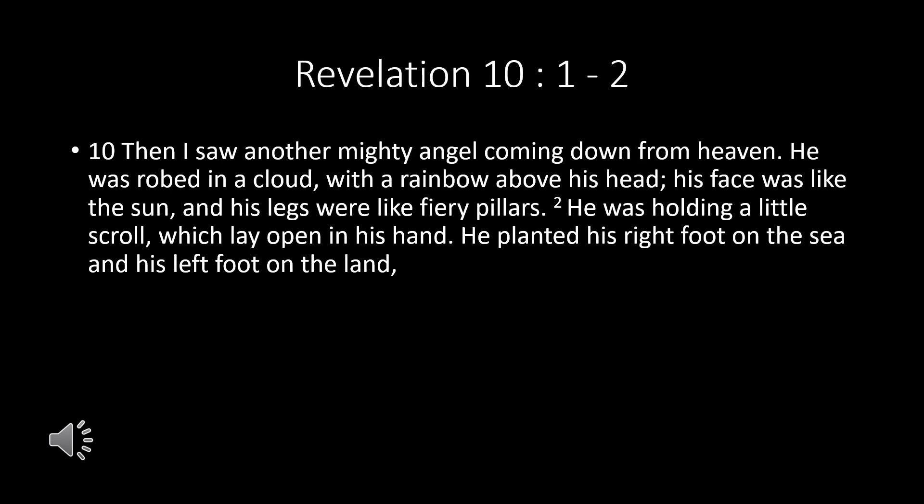Chapters 4 through 9, the setting has primarily been in heaven. But now in chapter 10, the setting shifts to earth and the time frame to John's lifetime. Revelation chapter 10, verses 1 and 2: 'Then I saw another mighty angel coming down from heaven. He was robed in a cloud with a rainbow above his head. His face was like the sun and his legs were like fiery pillars. He was holding a little scroll which lay open in his hand. He planted his right foot on the sea and his left foot on the land.'